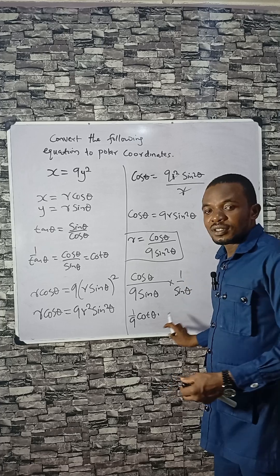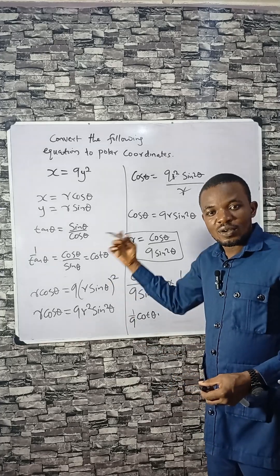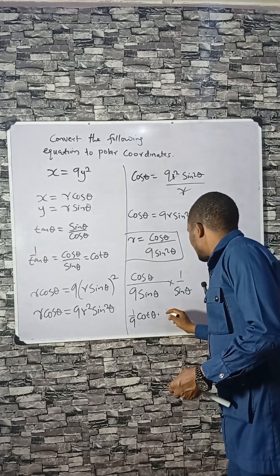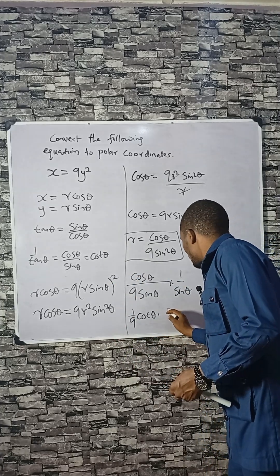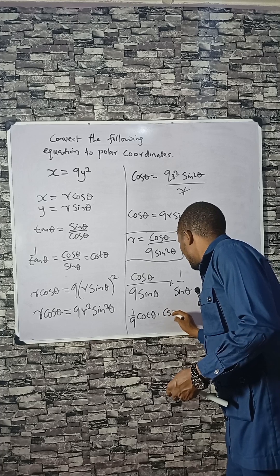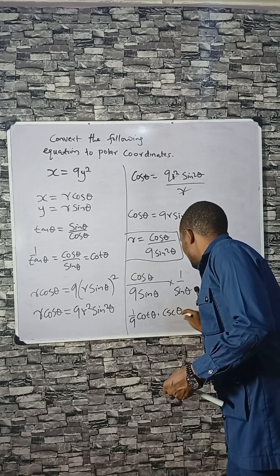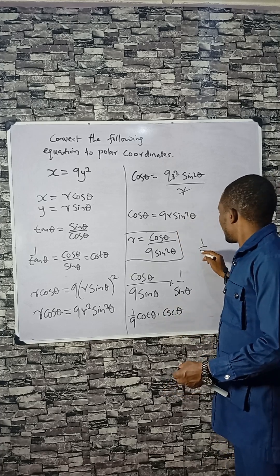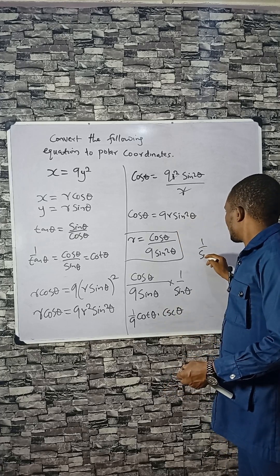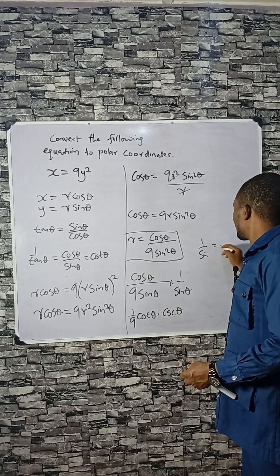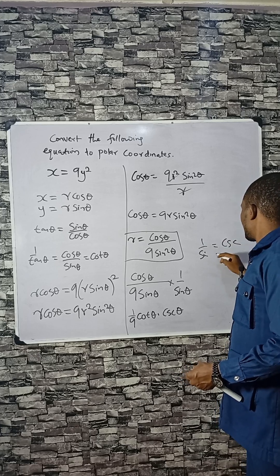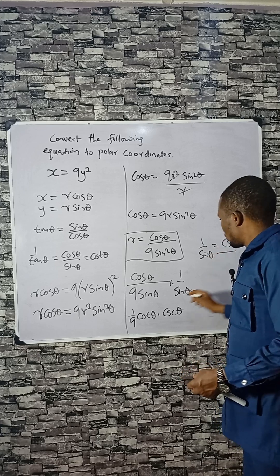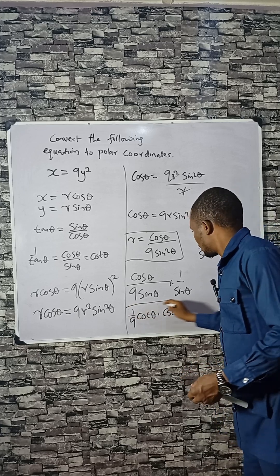So the final answer is R equals (1/9) cotθ times 1 over sinθ, and since 1 over sinθ is cscθ, we get R = (1/9) cotθ cscθ. We stop here.